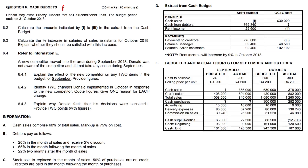Let's have a good look at the section on budgeting. This question is 35 marks in total. Question 6.1 was completed in the previous video — it was the debtors collection schedule.